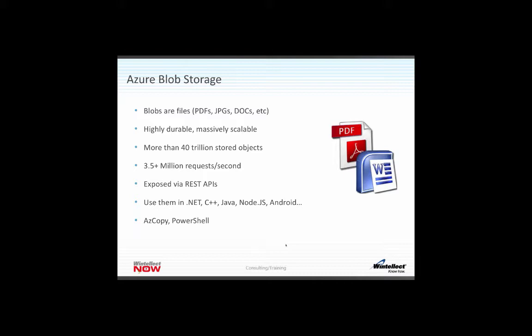Azure Blob Storage has a CDN service that you can place over it, which will put your files in cache and serve them locally to the user — Florida users get Florida files out of cache, Europe users get European files out of cache, avoiding network latency. The way you use Azure Blob Storage is through the Azure Storage Client SDK, available in .NET, C++, Java, JavaScript, Node.js, and Android. But at its core, Azure Blob Storage is just a REST API — a typical URI that you interact with like any other URI.